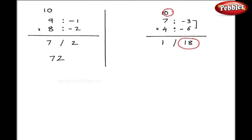So the number of digits on the right hand side should be only 1. I have to carry this 1 and add it to the left hand side. So I write 18 as 1 and 8 — this 1 will be added to the left hand side — and my answer is 28.